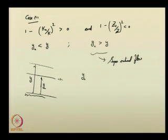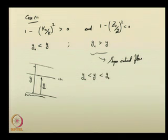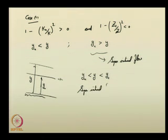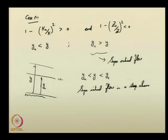Consider the case where y_n is less than y and y_c is greater than y, so that y_n < y < y_c. This gives supercritical flow in a steep channel. Why is this supercritical flow? Because y_n is less than y_c, this is therefore a steep channel.